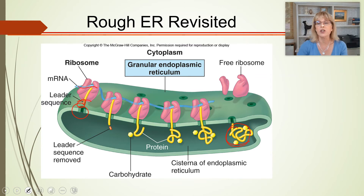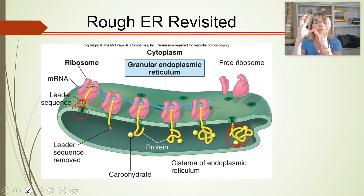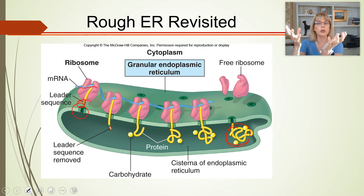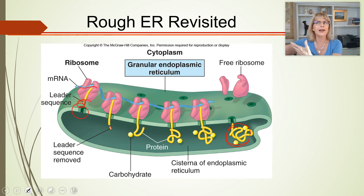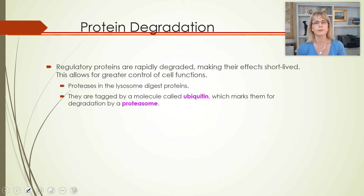That's how it happens. Then the rough endoplasmic reticulum forms a large vesicle filled with different proteins, and they get transported to the Golgi apparatus for packing, shipping, and extra modification.